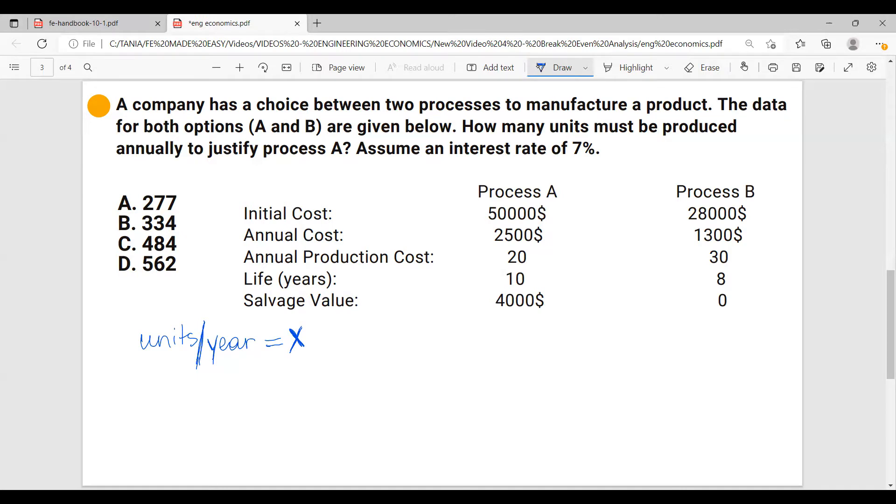In order to be able to compare process A with process B, we have all of these costs and we have to convert them into the same unit, which is present worth, annual, or future. And I'm noticing here, since we have different lifetime, we cannot do present worth, we're going to have to do equivalent uniform annual cost. So let's transform or convert everything into equivalent uniform annual cost. And remember when you have to calculate a cost, the costs are positive and all of the income is negative.